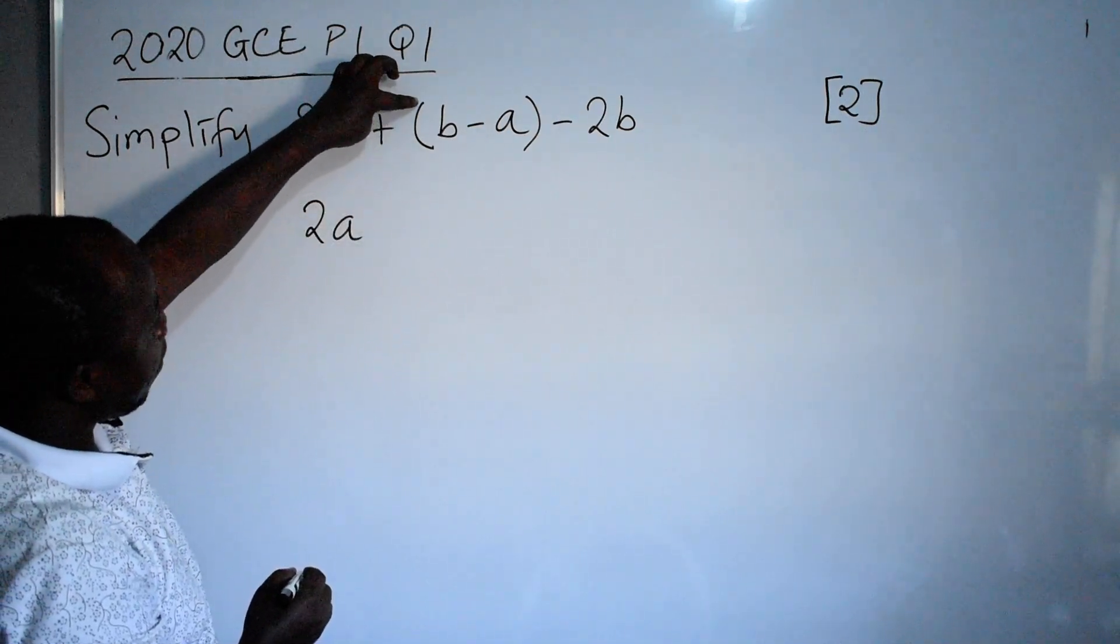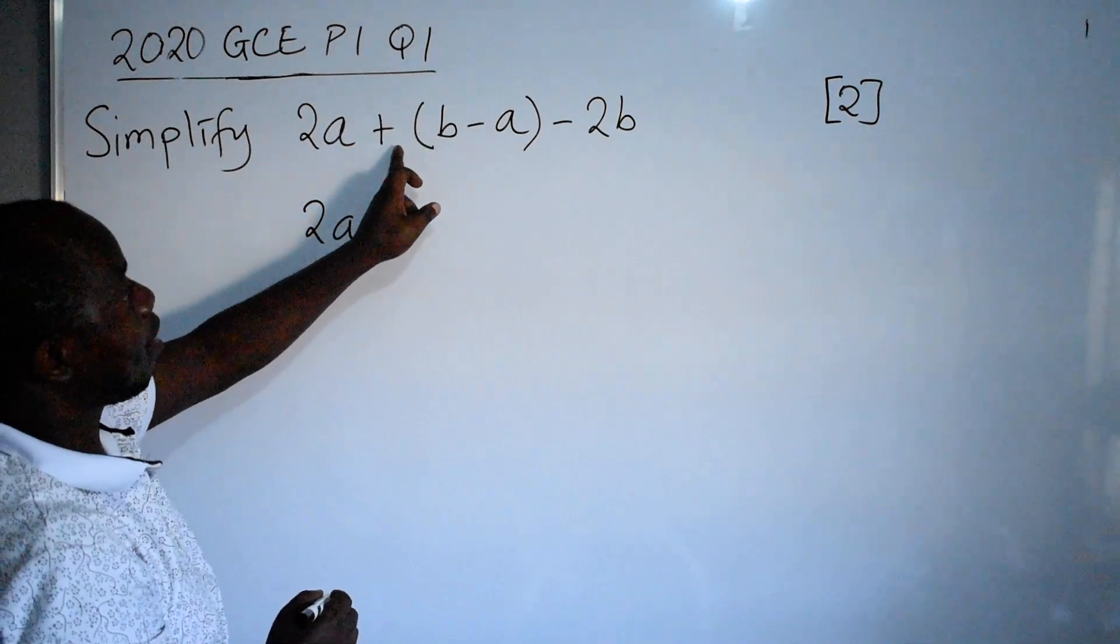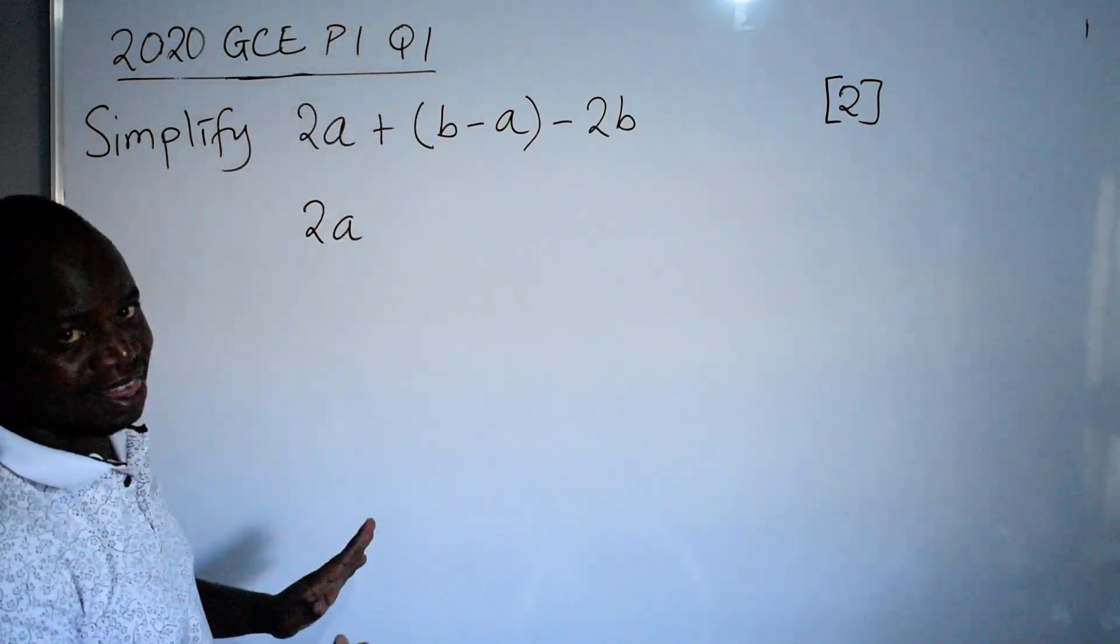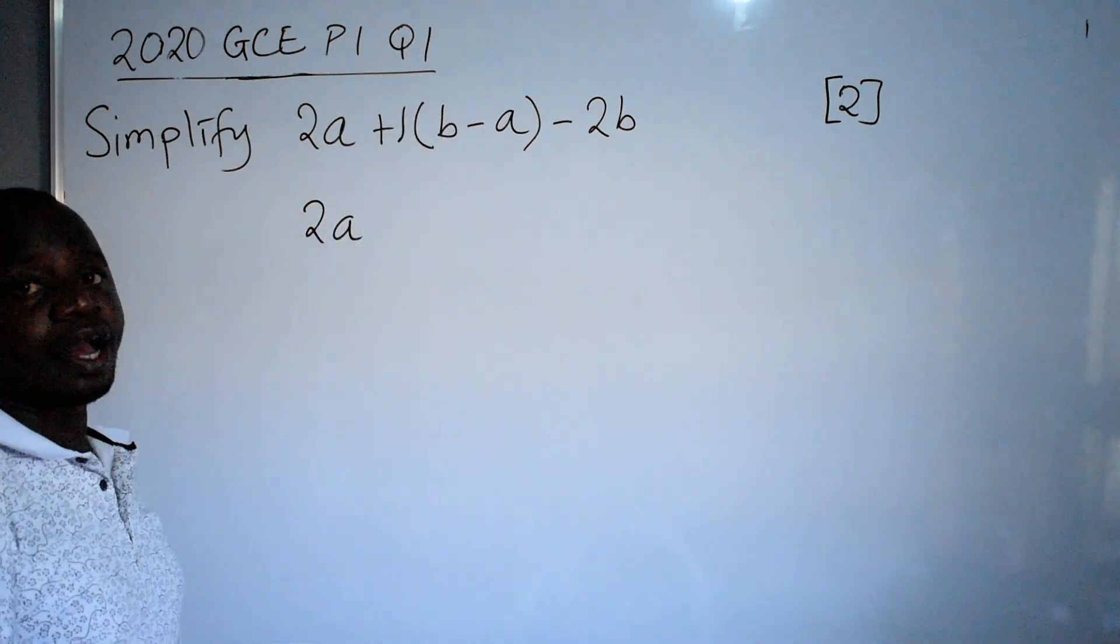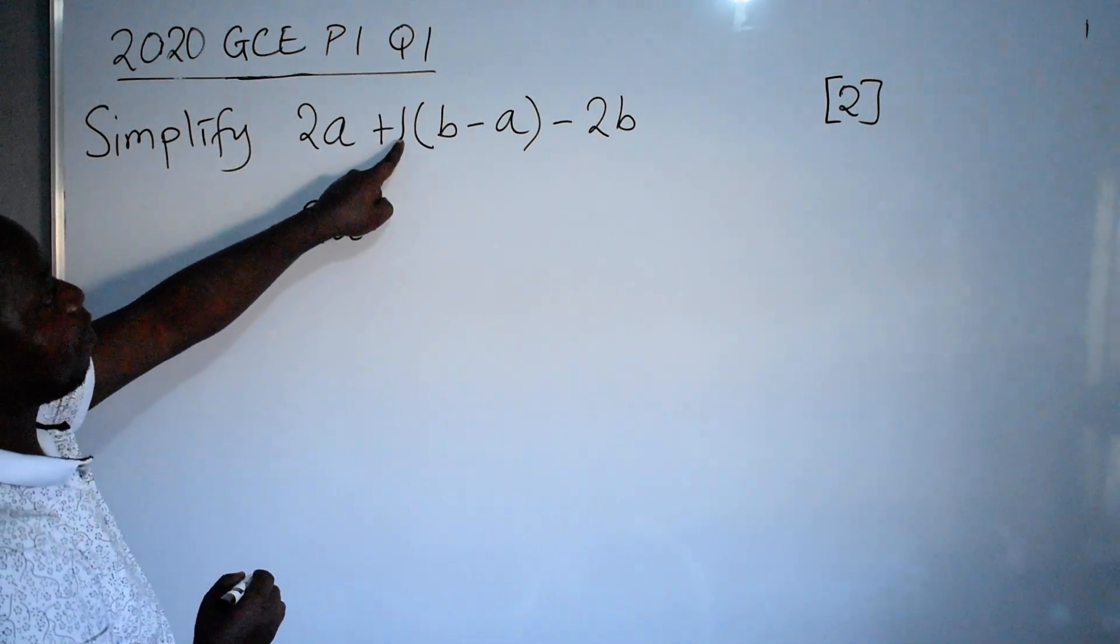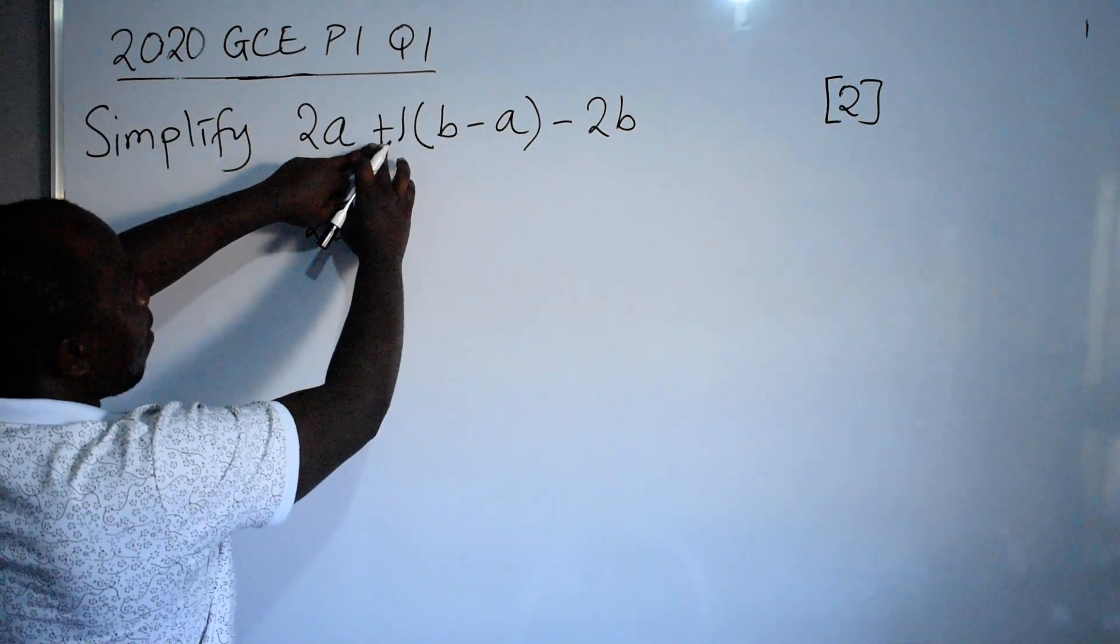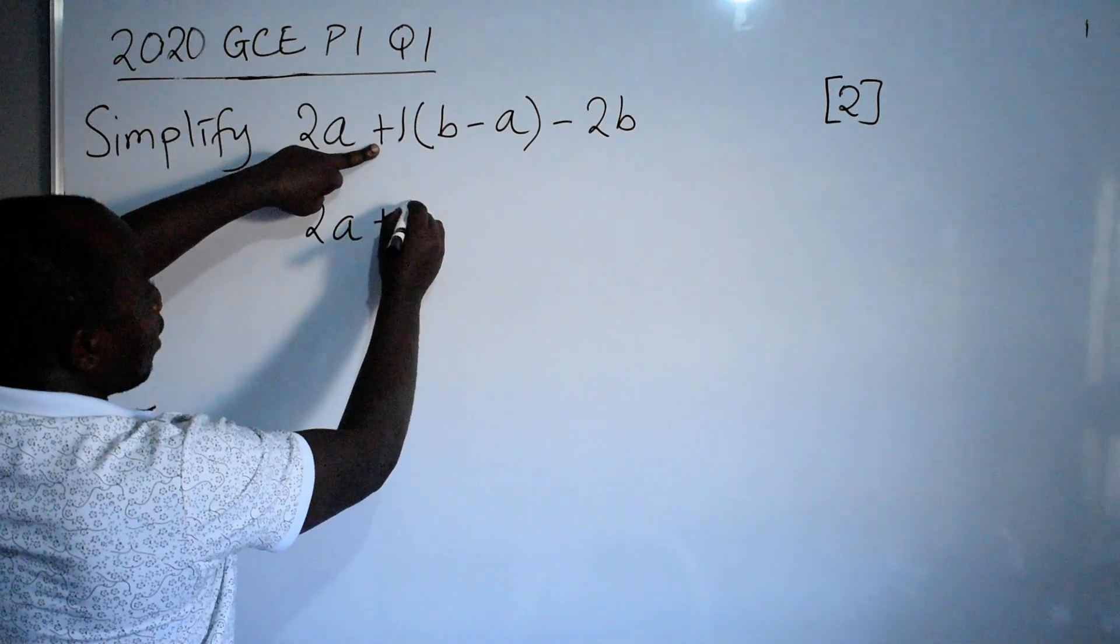Just outside the opening bracket here there is no number that we need to multiply with. So what you need to do is, if there is nothing, if there is no number, just know that there is a 1. So you start multiplying by 1. We are now going to say positive 1 here times b, this will give us plus b.